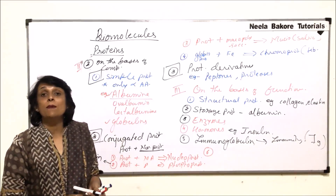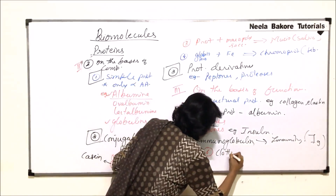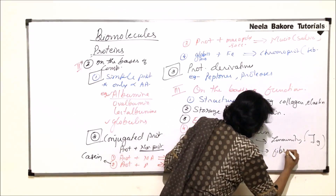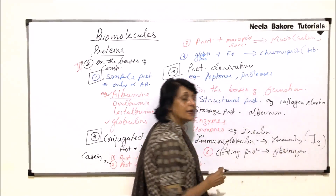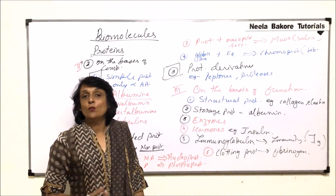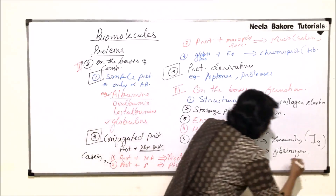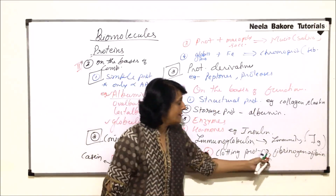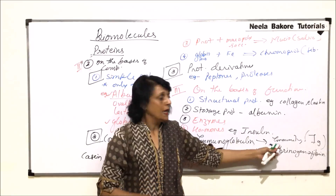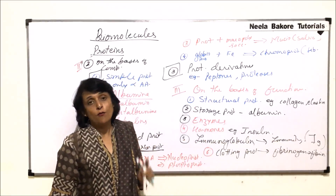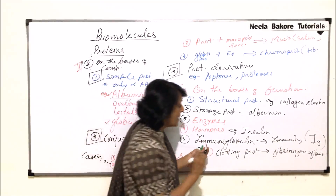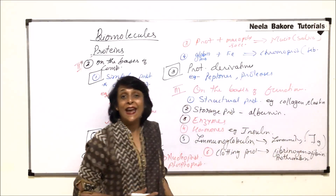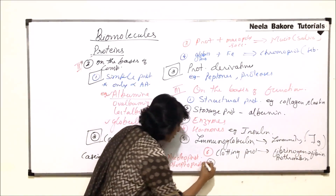The next category is clotting proteins — proteins which help in blood clotting. For example, fibrinogen is a soluble protein that gets converted into insoluble fibrin, which is again a protein, and it helps in blood clotting. Fibrinogen and prothrombin are all proteins helping in blood clotting.